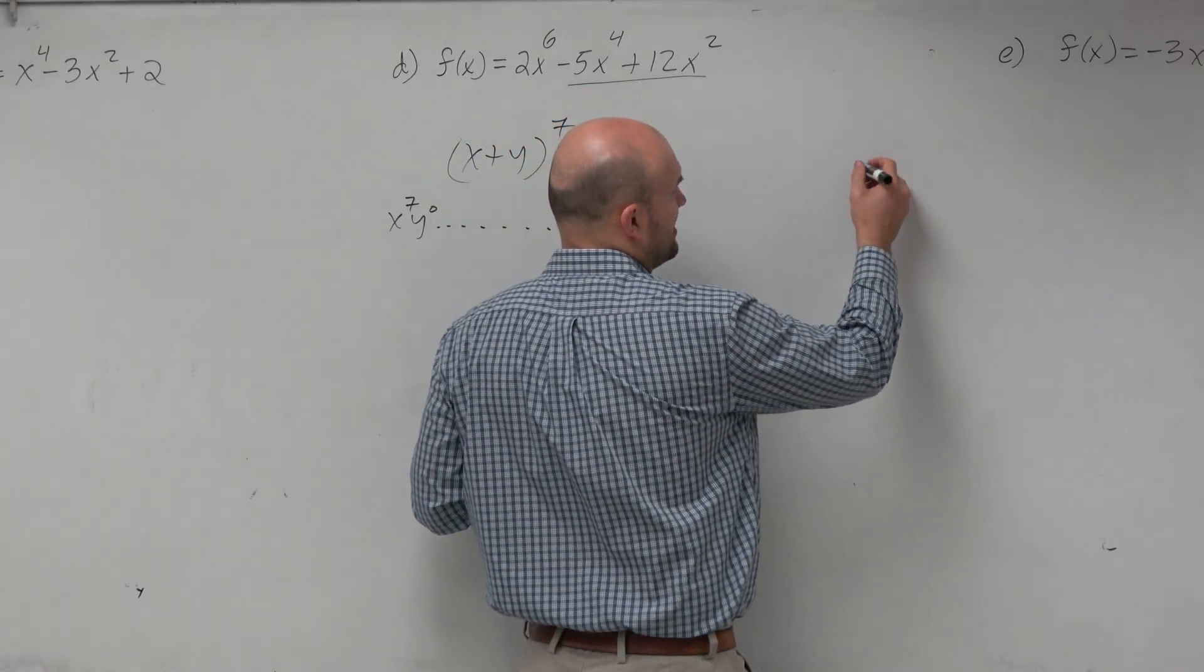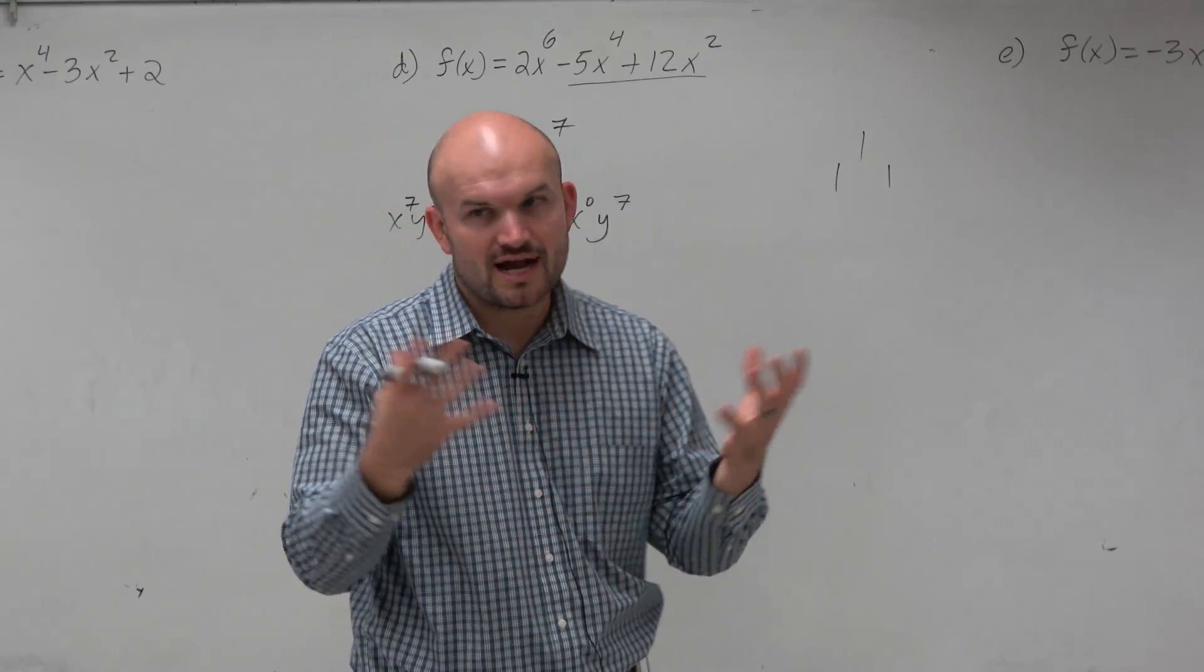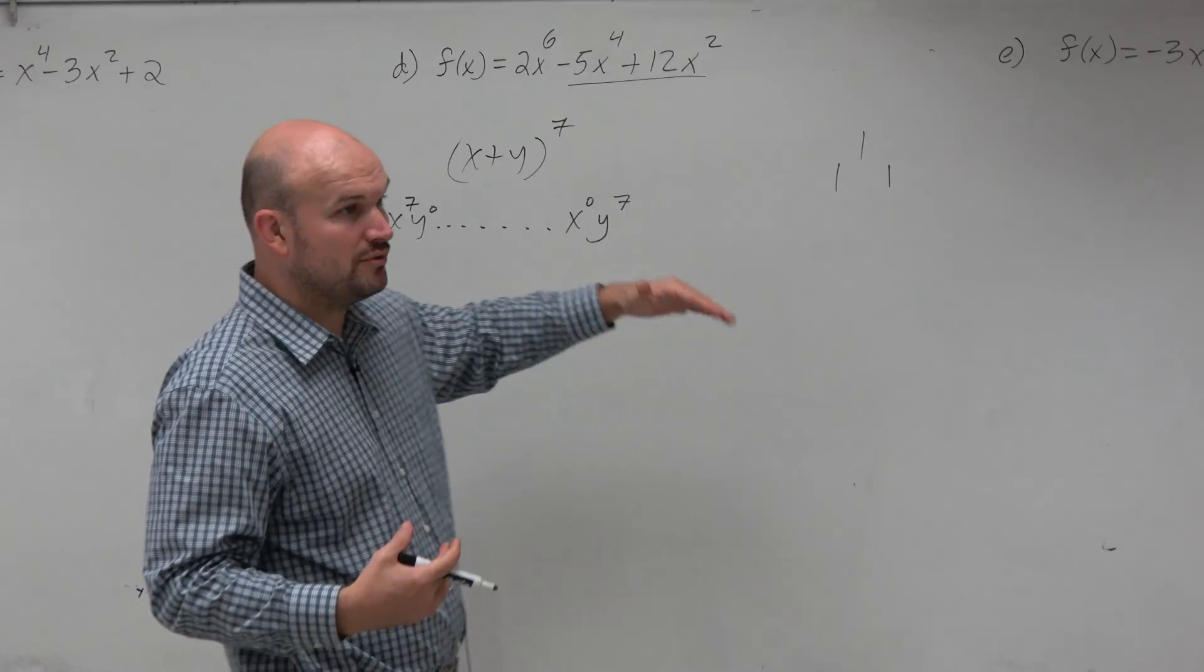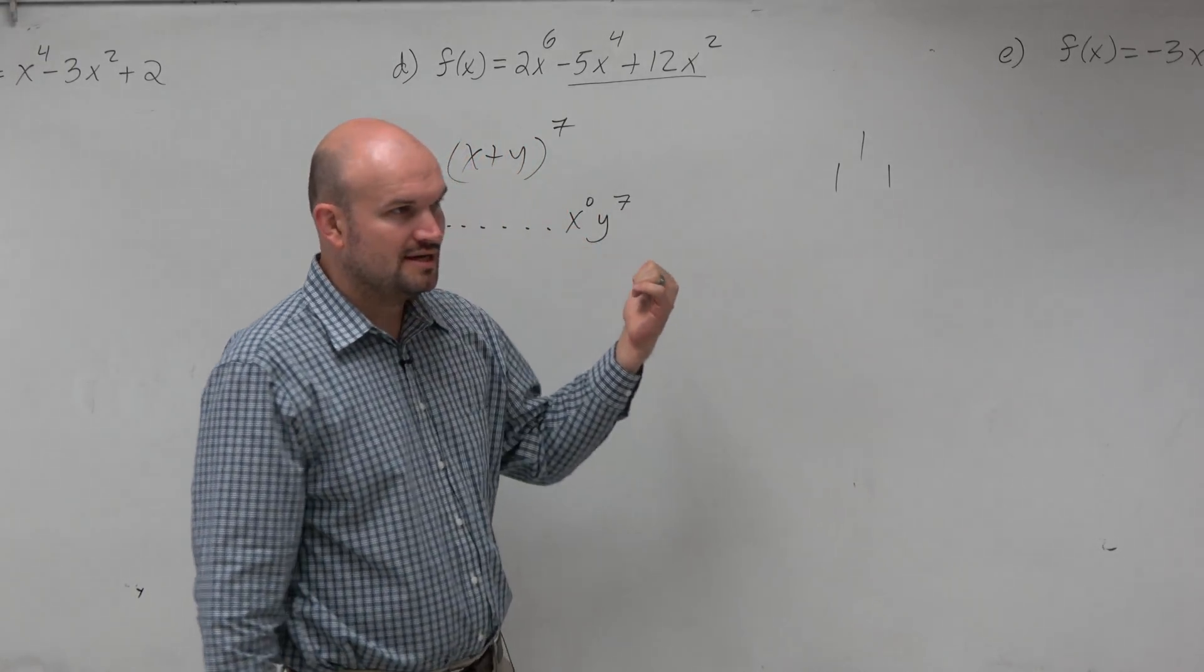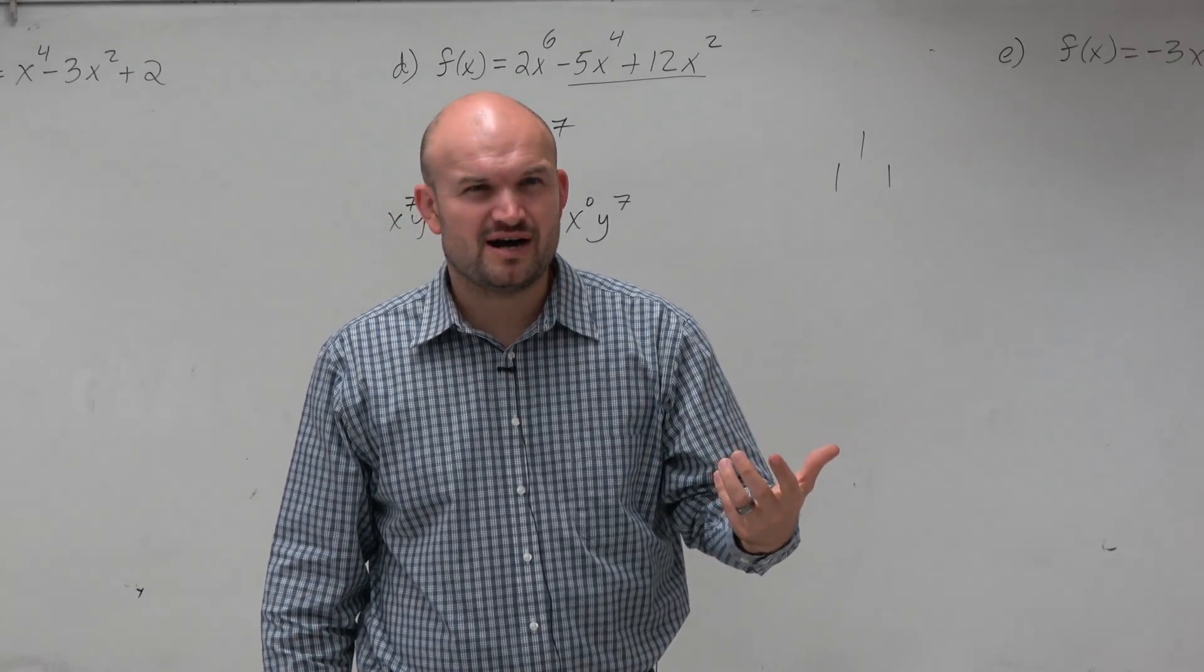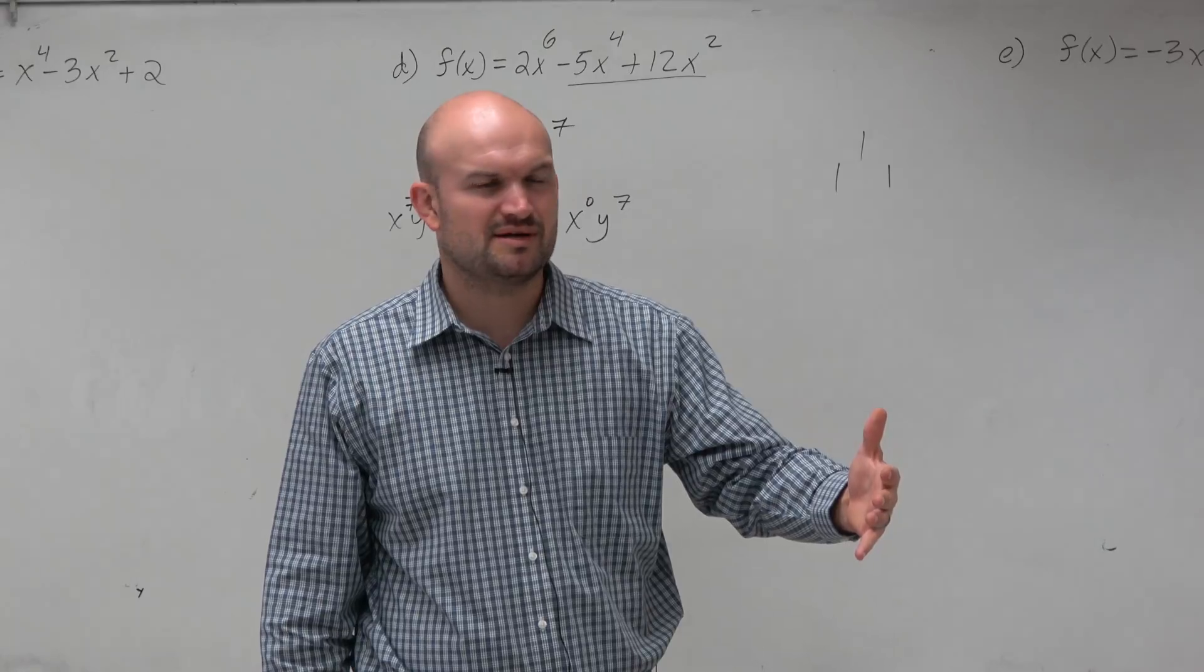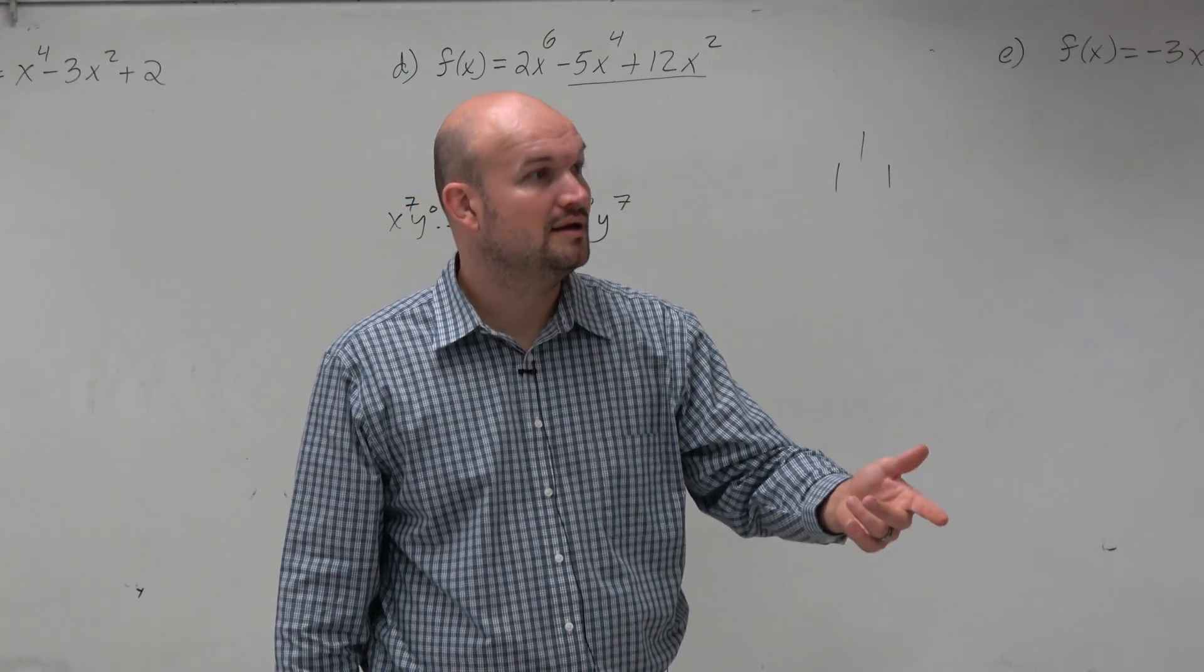So first of all, if you need to create Pascal's triangle, hopefully you can start with at least the first two, like the triangle of ones that I call it, and then you can complete each and every row. But some people are like, all right, I get how to complete the rows, but how do I know which row matches this? Does anybody remember the relationship that we found with the binomial expansion, how many terms it has compared to the power? It has one more. Yes, it has one extra.